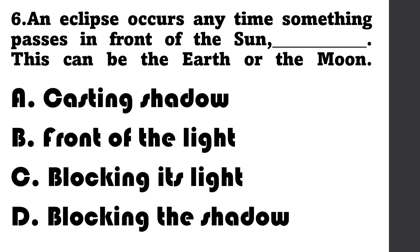Number 6: An eclipse occurs when something passes in front of the sun — blank. This can be the earth or the moon. A. Casting shadow, B. Front of the light, C. Blocking its light, D. Blocking the window.